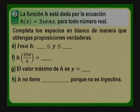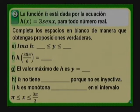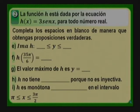El valor máximo de h depende del efecto del parámetro A sobre la función. H no tiene inversa porque no es inyectiva; esto está vinculado con el concepto de inyectividad. H es monótona: debemos decidir si es creciente o decreciente en el intervalo de π a 3π/2. Se recomienda representar gráficamente la función, incluso usando GeoGebra descargado del Play Store, para analizar qué sucede en ese intervalo.